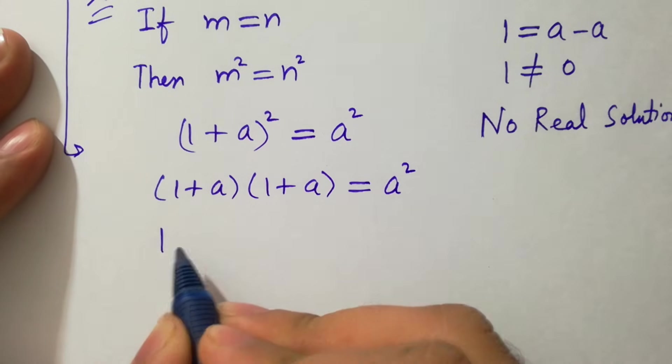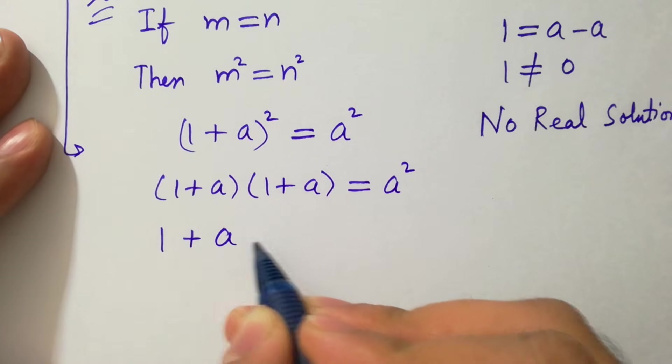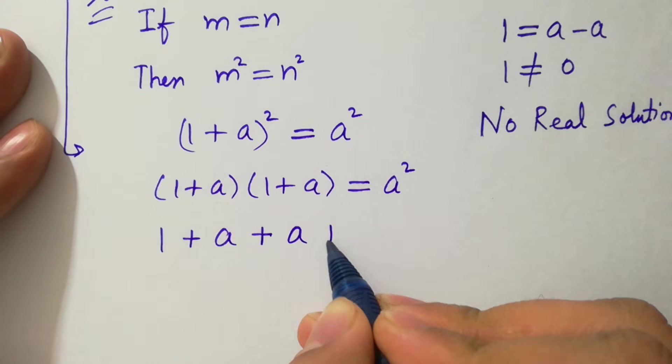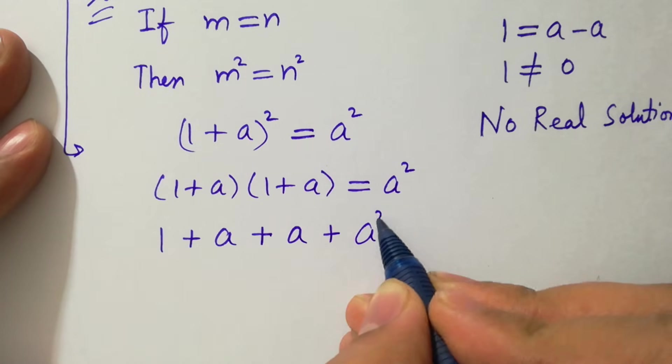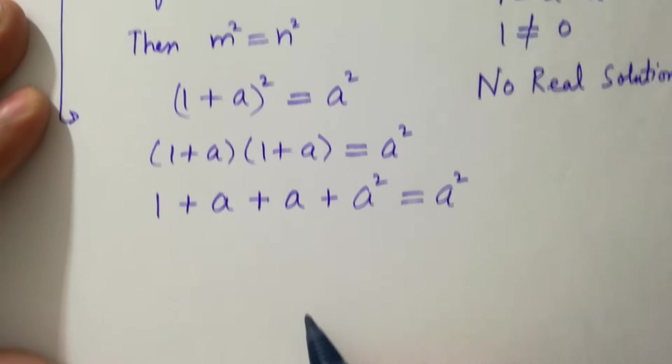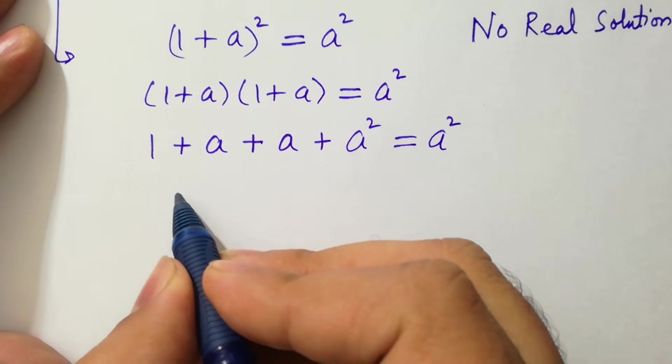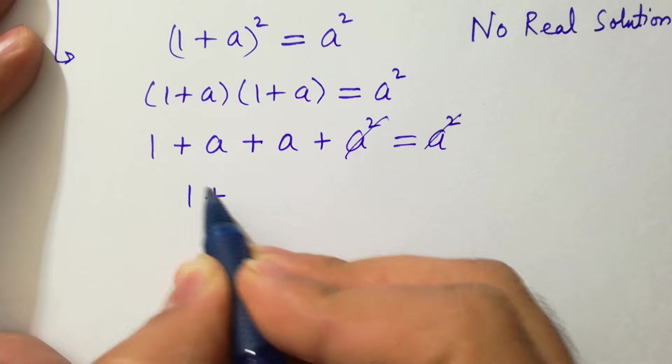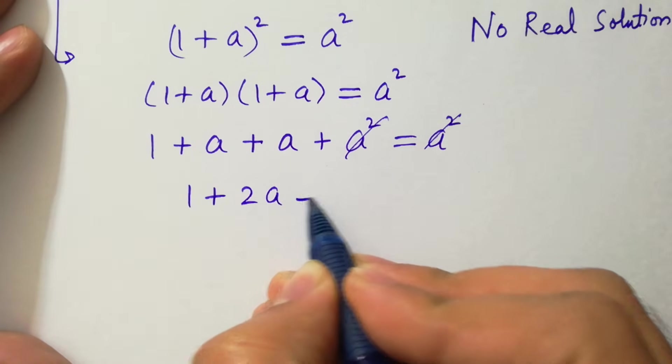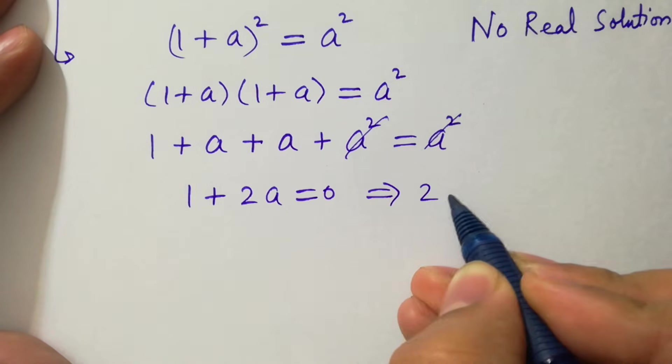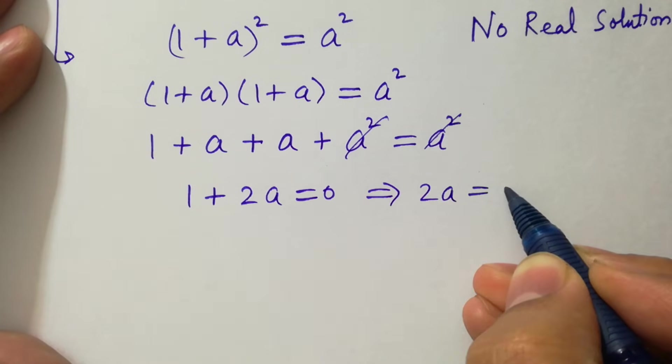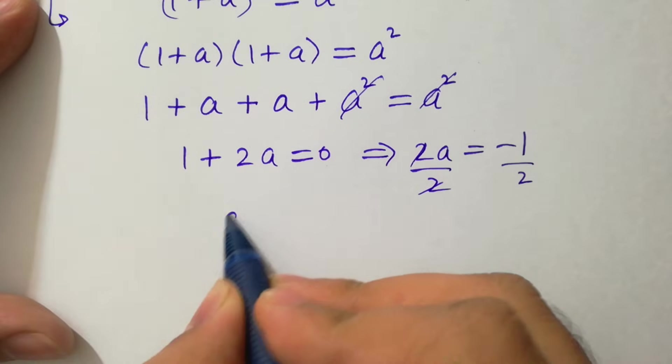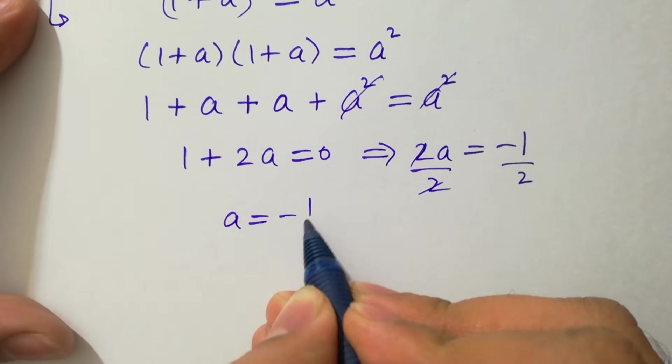1 times 1 is 1, plus 1 times a is a, plus a times a is a². We have a² here and a² cancels. We have 1 + a + a, which is 1 + 2a = 0. So 2a = -1, divide by 2 on both sides, 2 cancels. We get the value of a = -1/2.